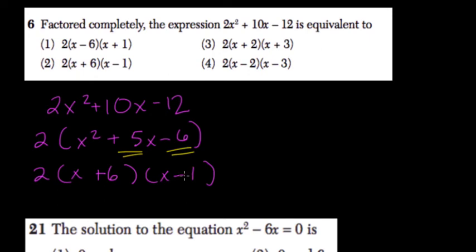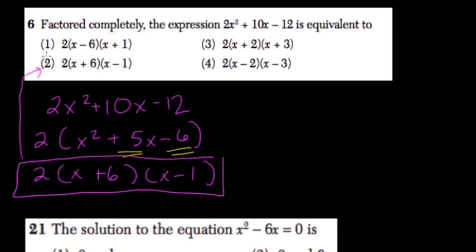So plus 6 and negative 1 are going to help me find the roots later on. But here, we're done. We have this in factored form. That's choice 2.